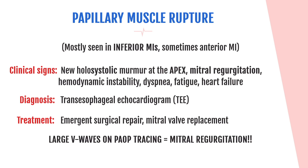Let's dig deeper into papillary muscle rupture. The papillary muscles help attach the mitral and tricuspid valves to the walls of the ventricles. When you have an MI, you don't receive adequate oxygenation and perfusion to those tissues, which can lead to papillary muscle rupture. Once those muscles are ruptured, they can no longer prevent the backflow of blood through the heart — that's where you get the regurgitation, or insufficiency, and that new holosystolic murmur at the apex. You will see hemodynamic instability, dyspnea, fatigue, and symptoms of heart failure.